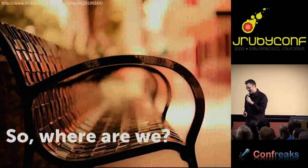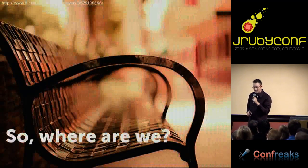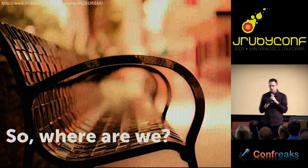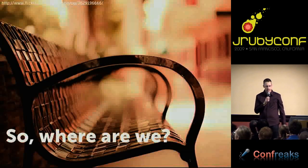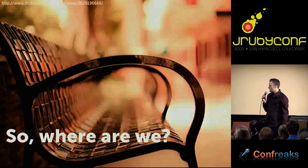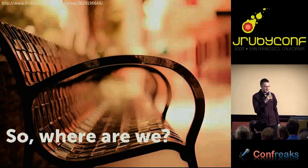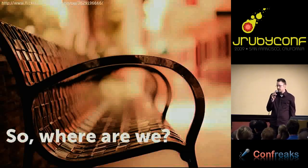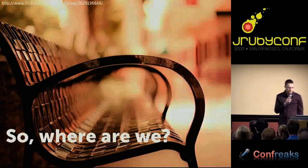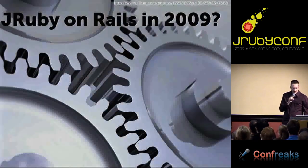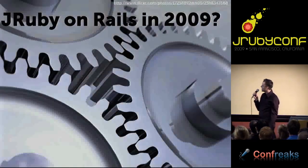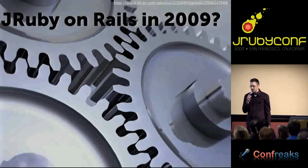I thought I'd take a step back, sort of like Charlie and Tom did, and ask where we are with Rails running on JRuby, look at some of the pain points, the things we can improve upon, and what we're able to do well, and paint a picture of where we can move forward. JRuby on Rails in 2009 — where are we? How does it go? It works.